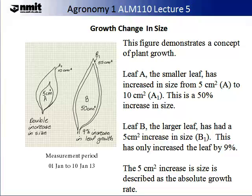A second leaf was measured, leaf B. On the 1st of January, the area of this leaf was determined at 50 centimetres squared, and then on the 10th of January 2013, this leaf was 55 centimetres squared. We can say that leaf B has had a 9% increase in leaf growth. You will observe that both leaves increased their area by 5 centimetres squared. However, there was a significant difference in percentage change — leaf B increased by 9%, while leaf A increased by 50%. This measurement is described as the absolute growth rate.